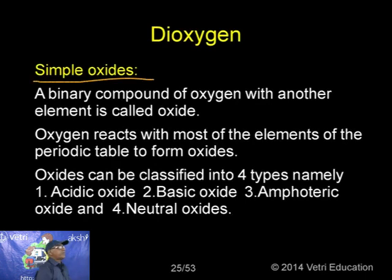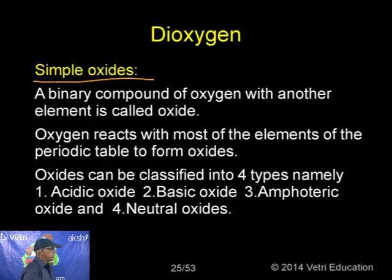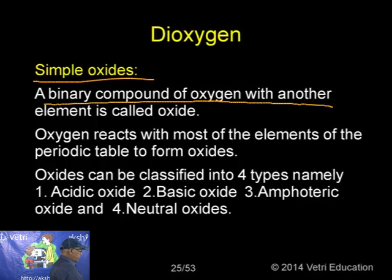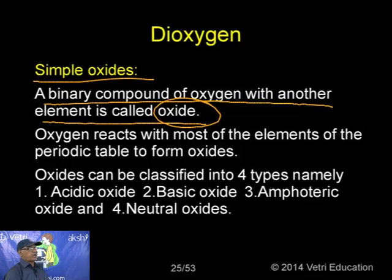An acidic oxide is any oxide which gives an acid with water. As a general rule, non-metals form acidic oxides, though some metal oxides in high oxidation states also behave as acidic oxides. Examples: CO₂, SO₂, N₂O₅, Cl₂O₇. For instance, SO₂ dissolves in water to produce sulphurous acid H₂SO₃, so SO₂ is an acidic oxide.